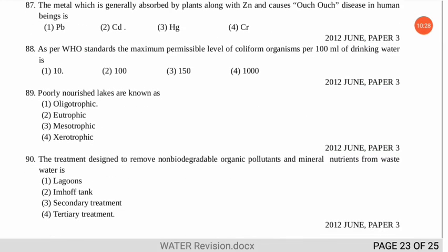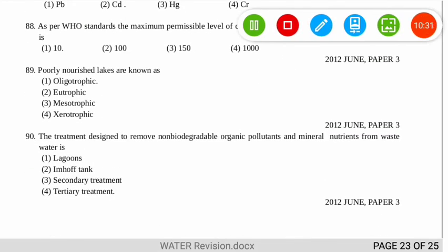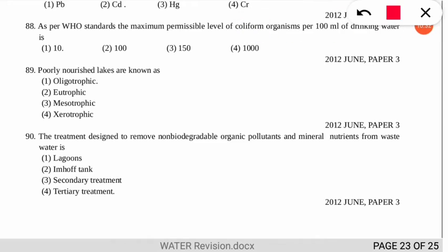Question 89 asks: poorly nourished lakes are known as what? That means they have less available nutrients. The correct option is number 1 — oligotrophic lakes.